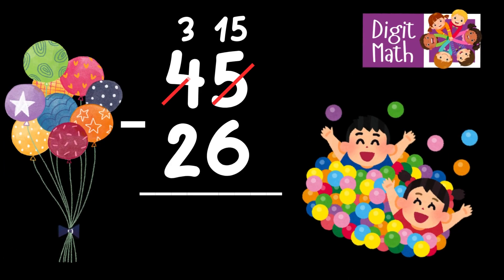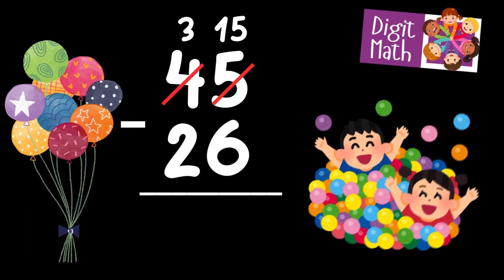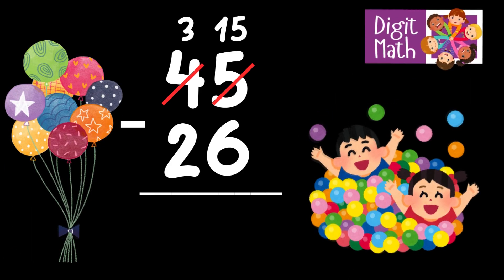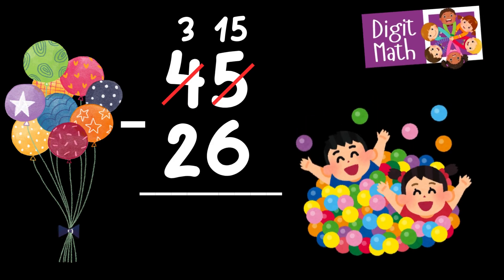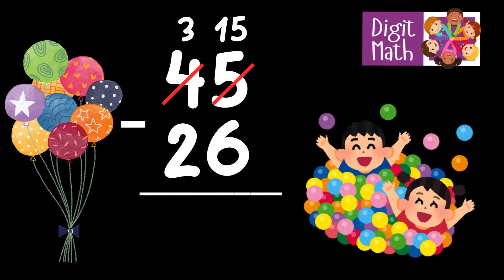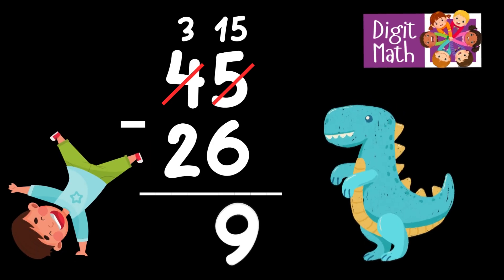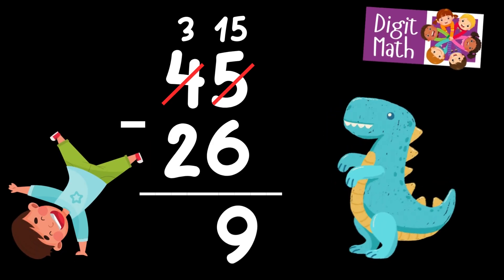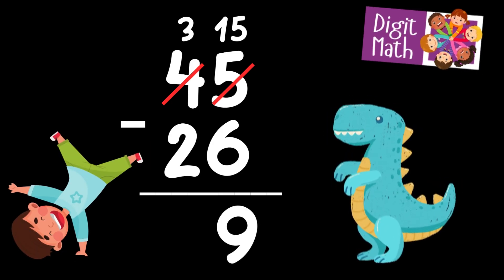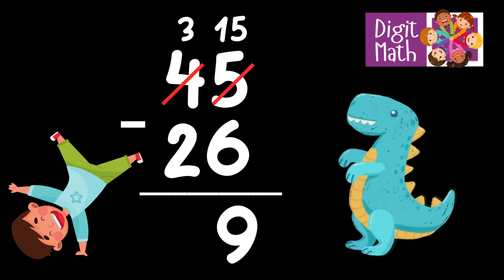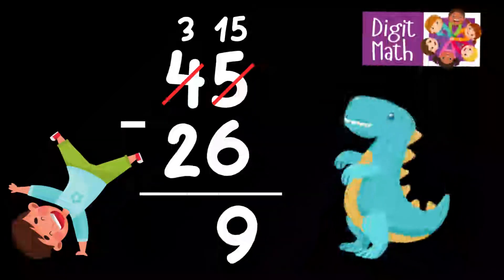Now we have 15 in the Units column. Subtracting 6 from 15 gives us 9. In the Tens column, we have 3. Subtracting 2 from 3 leaves us with 1. Therefore, 45 minus 26 equals 19.